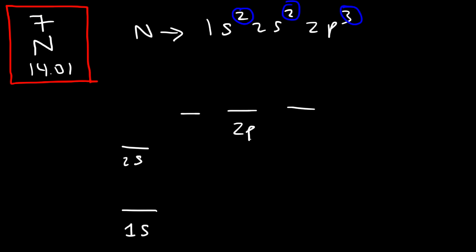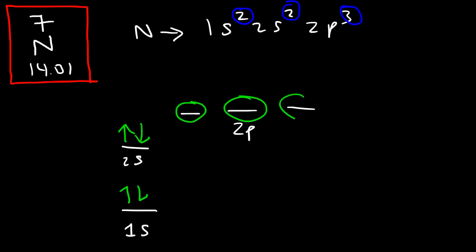The p sub level always has three orbitals. You want to fill each orbital from the bottom all the way to the top. The first orbital has two electrons, and you need to put opposite spins. Once we get to the 2p orbital, each of these orbitals has the same energy, so they're known as degenerate orbitals. When you fill in degenerate orbitals, you need to fill them one at a time with parallel spins.